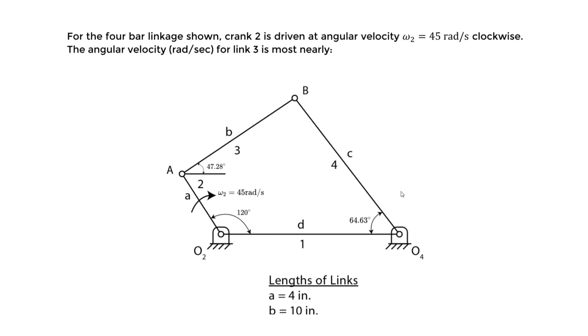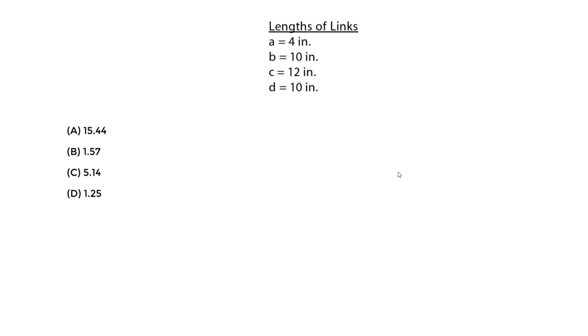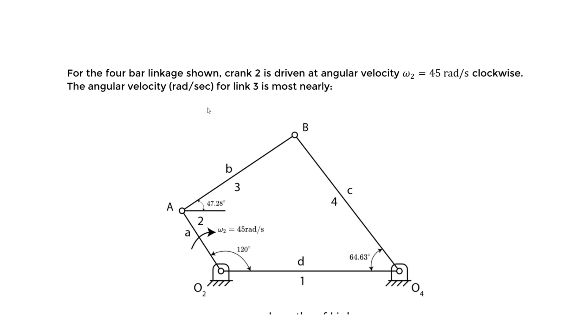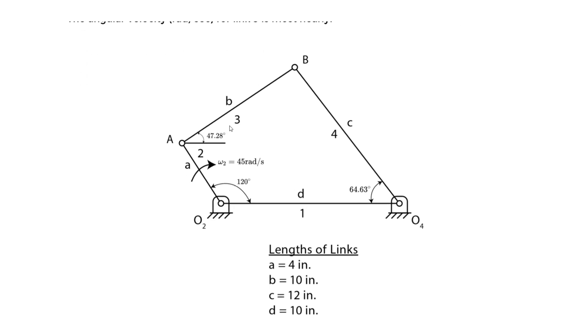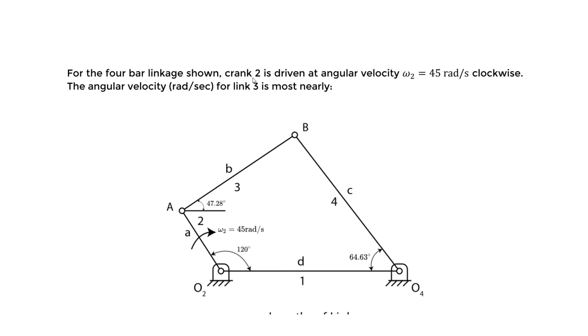So I'm just going to prove that what we got is actually correct. The last example is the last one—if you haven't seen that you can watch it, skip to the final answer, and you'll see that you will get the same answer using the equations. So it's a four-bar linkage. Crank two, this crank is always what's driven here. We apply this angular velocity of 45 radians per second clockwise. The angular velocity in link three is what? That's what we want to find.